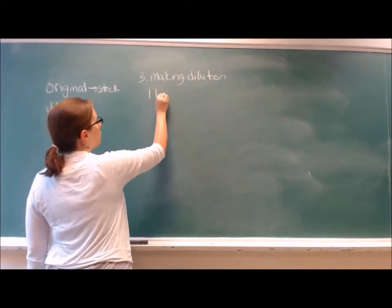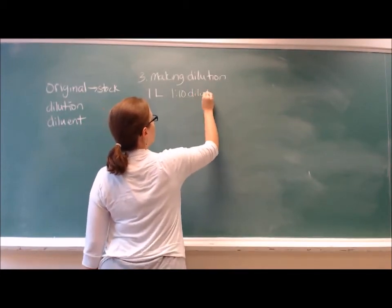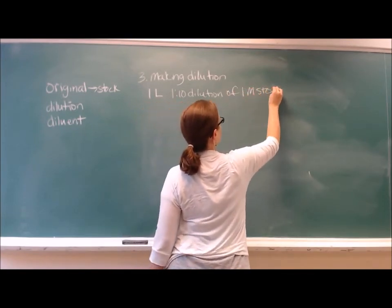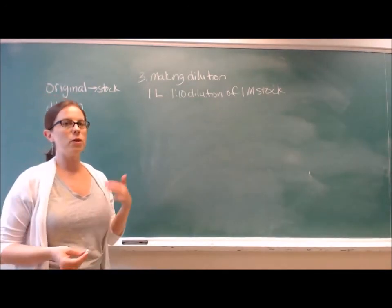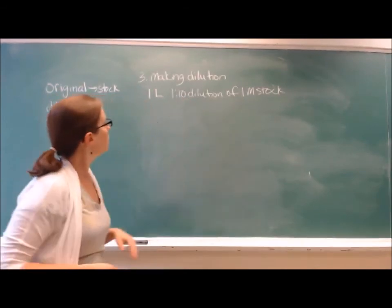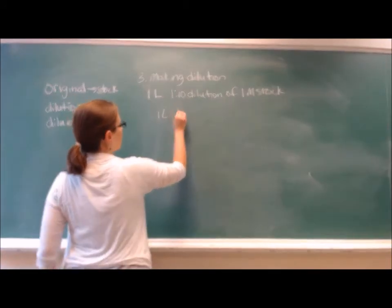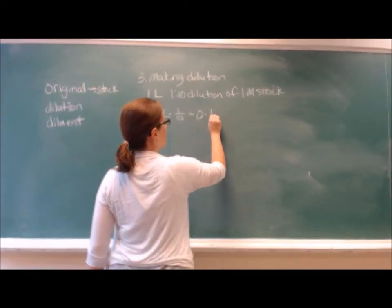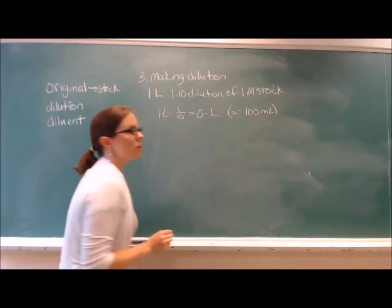Let's say we want 1 liter of a 1 to 10 dilution of a 1 molar stock. We just went through the calculation, so we know the final concentration would be 0.1 molar, because we just divide 1 molar by 10. And similarly, when we're working with volumes, then we want 1 liter, 1 tenth of that is 0.1 liters, or 100 milliliters of the stock.